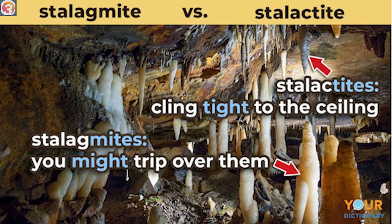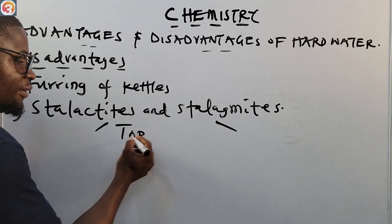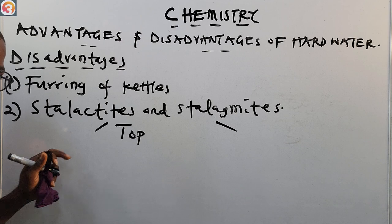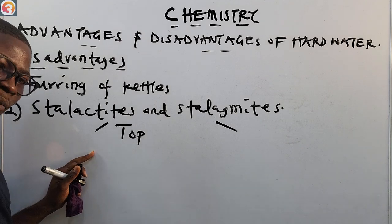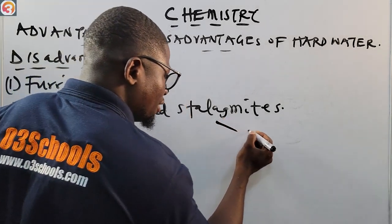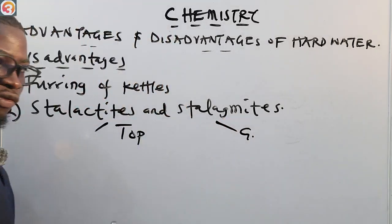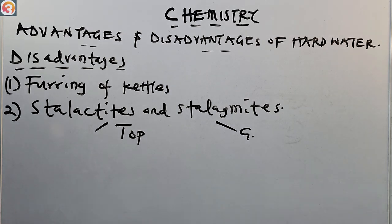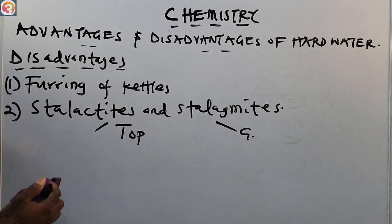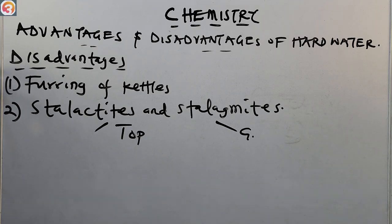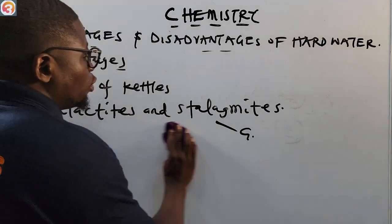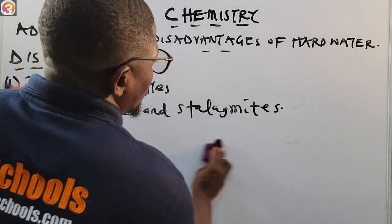An easy way to remember: 'C' in stalactites stands for ceiling — it hangs from the top. 'G' in stalagmites stands for ground — it grows from the ground up. Stalactites and stalagmites are another disadvantage of hard water.